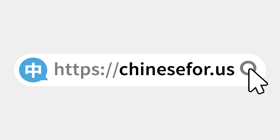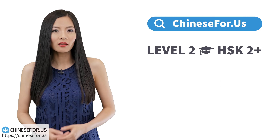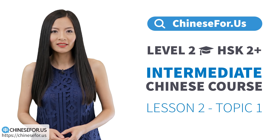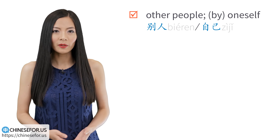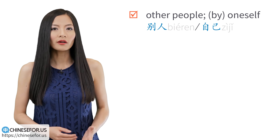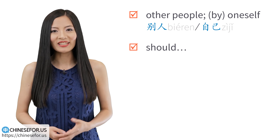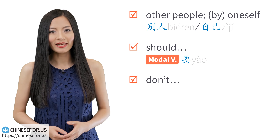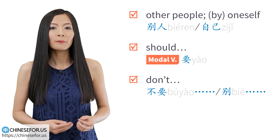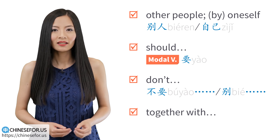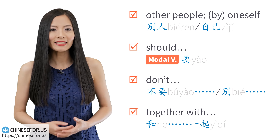别自己加班了。 Hi, Nihao, this is Chinese for us, HSK Level 2 Intermediate Chinese course, 终极汉语一, Lesson 2. 我是Lili. Today we'll learn how to say other people, oneself, and by oneself in Chinese. We'll also learn how to say should do something with 要, how to say don't do something with 不要 or 别, and how to say together with in Chinese: 和一起。